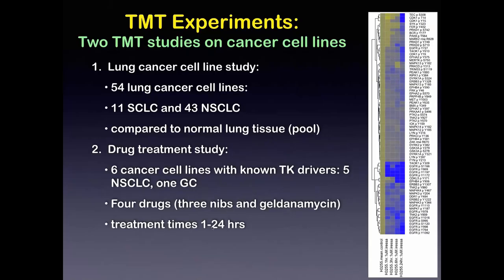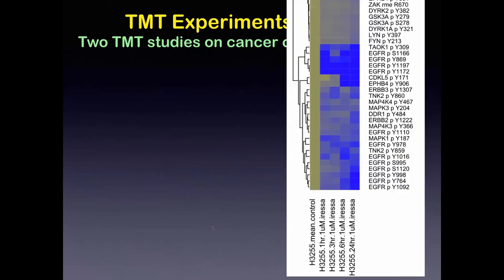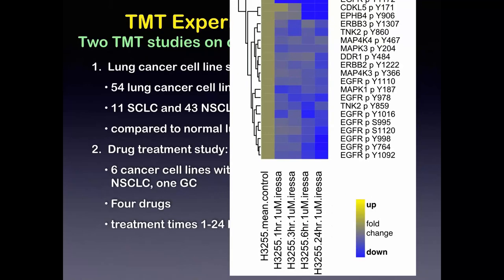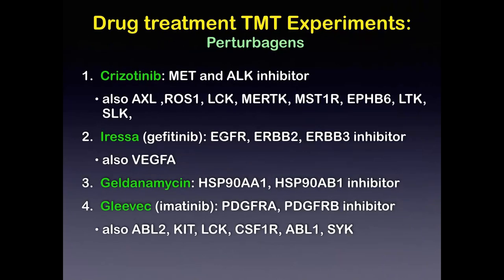Here's what the data looks like. This is one experiment with Iressa-treated H3255 cells. Iressa inhibits EGFR, so reassuringly the phosphorylation of EGFR goes down. I'm graphing these as heat maps where the control is on the left, down is blue and up is yellow. The perturbogens are chrysotinib, which inhibits MET and ALK; Iressa for EGFR and relatives; geldenomycin for the Hsp90 family; and Gleevec, which inhibits PDGFR-A and a few other things.